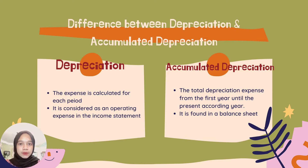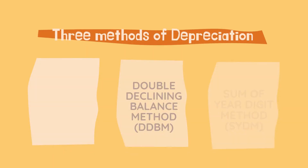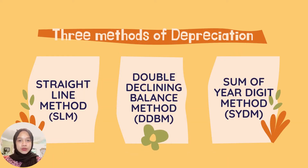Depreciation is the expense calculated for each period and it is considered as an operating expense in the income statement. But accumulated depreciation is the expense from the first year until the present accounting year and it is found in the balance sheet. There are three methods of depreciation: first is straight line method, second is double declining balance method, and lastly, sum of the years' digit method.